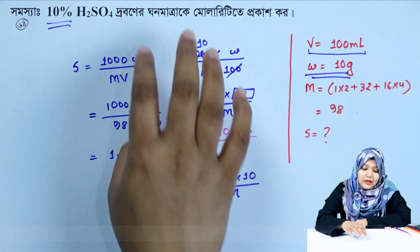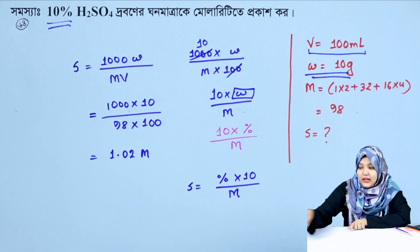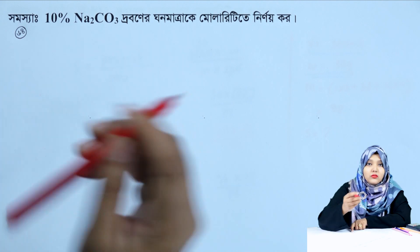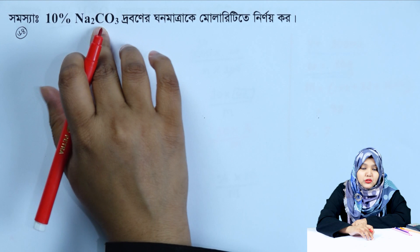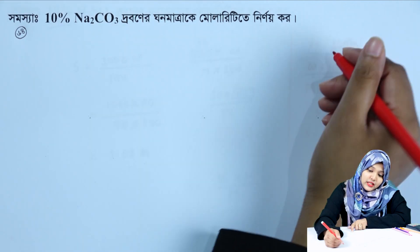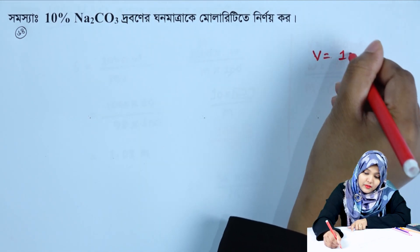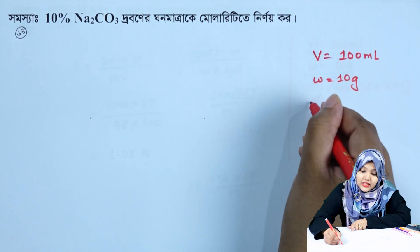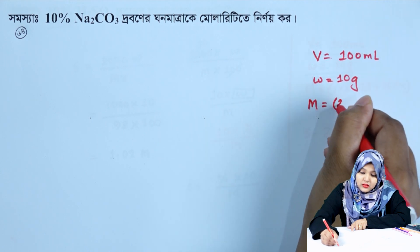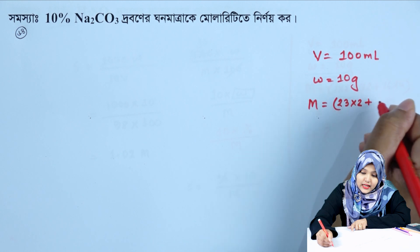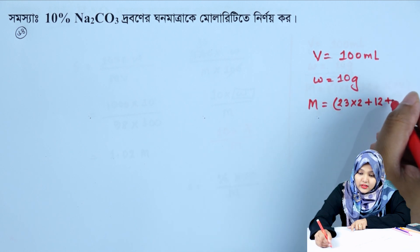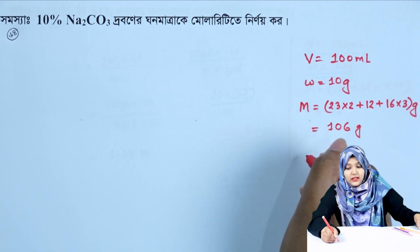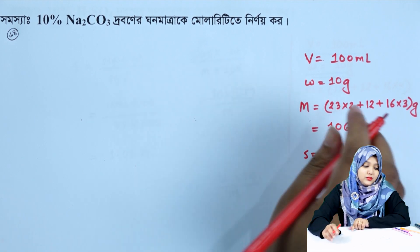When we get a percentage value, we apply this short-cut formula. For example: 10 percent sodium carbonate solution, so V equals 100 milliliters and W equals 10 grams. For sodium carbonate, M equals 23 into 2 plus carbonate: 12, plus oxygen: 16 into 3, giving a molecular weight of 106.